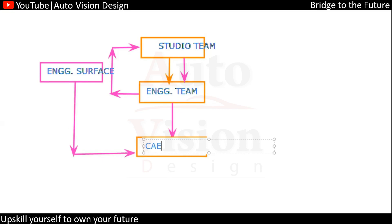We will deliver the data to CAE with the engineering surface, with whatever changes we have done, because the studio surface is not proper and we cannot accept it. It might have a clash with a surrounding part, it might not be tooling feasible, or there might be other issues.